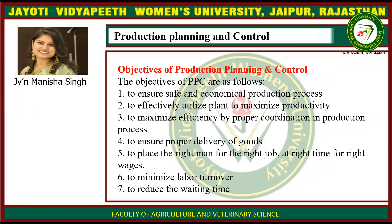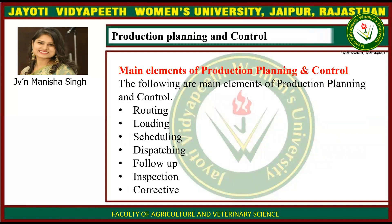The objectives of Production Planning and Control are as follows: to ensure safe and economical production process, to effectively utilize plant to maximize productivity, to maximize efficiency by proper coordination in production process, to ensure proper delivery of goods, and to place the right men for the right job at the right time for the right wages, and to minimize labor turnover and reduce waiting time.